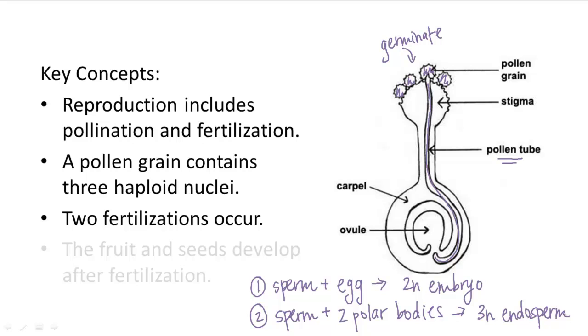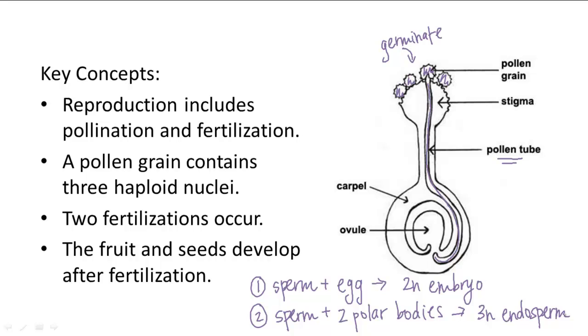After fertilization, the ovary can mature into a fruit containing the mature seed, and this is the completed process of flower reproduction.